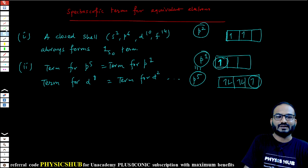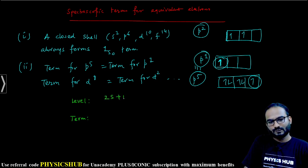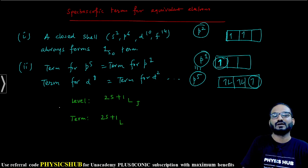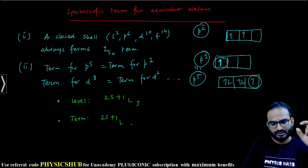Now two things are there: one is called level, another is called term. What is the difference? When we write everything 2S+1 LJ, this is called level. When you're only writing 2S+1 L without mentioning J, that is called term. Level means everything. Term means only the head and body part - the tail part is not there.